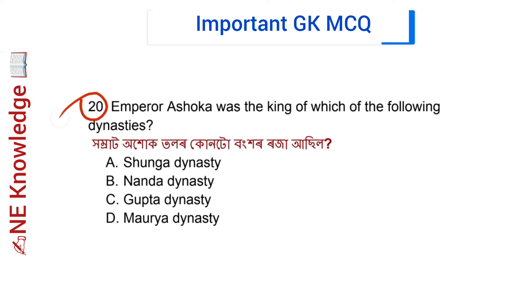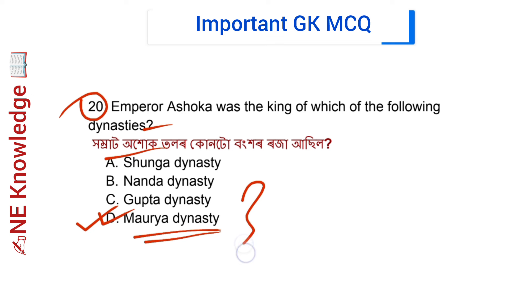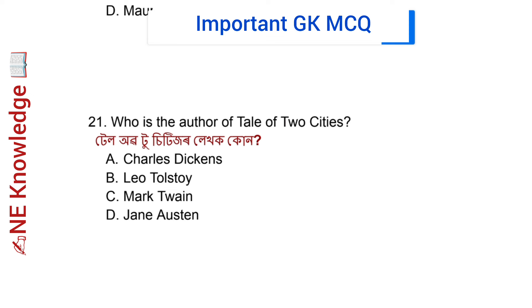Question number 20: Emperor Ashoka was the king of which dynasty? Options: Nanda Dynasty, Gupta Dynasty, Maurya Dynasty. Correct answer: Option D — Maurya Dynasty. Ashoka was the great king of the Maurya Dynasty, and Chandragupta Maurya was the founder of the Maurya Dynasty.